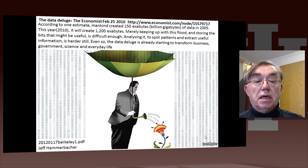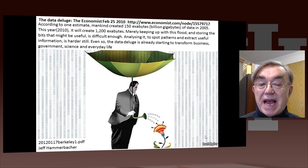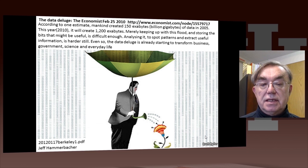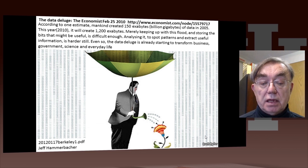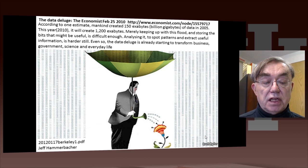Here's a slide from The Economist, 2010, so it's somewhat out of date. It points out that in 2005 we created 150 exabytes — an exabyte is a thousand petabytes of data. And in 2010, it estimates we created 1200 exabytes. So this is the flood or deluge of data, illustrated in a picture of bits raining down on a fellow who is absorbing and processing them — the wisdom coming out through a nozzle and watering a plant, representing the garden of wisdom in a particular field. Jeff Hammerbacher identified this source as very good.